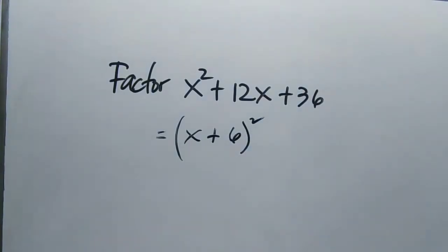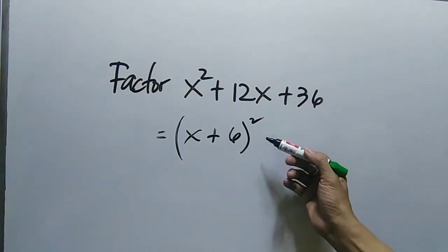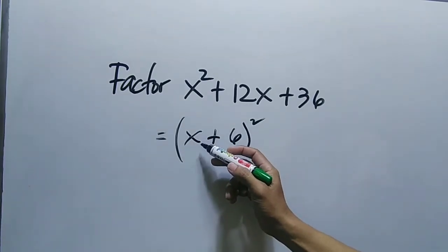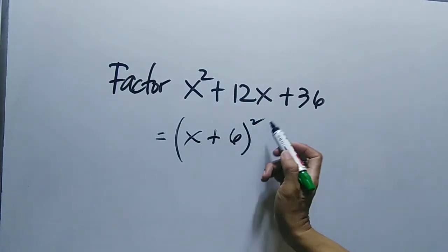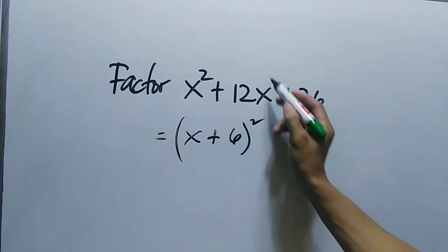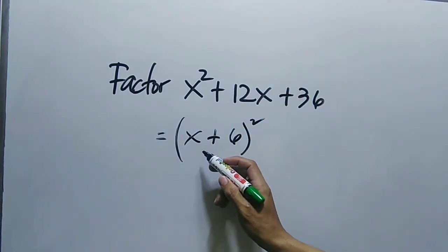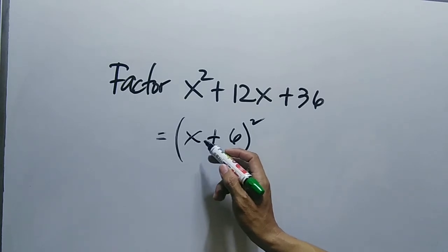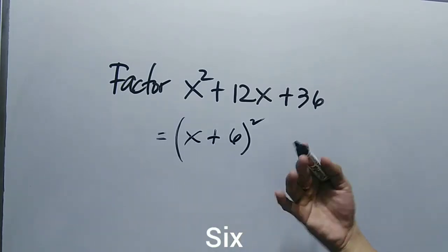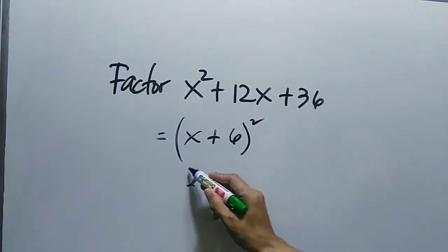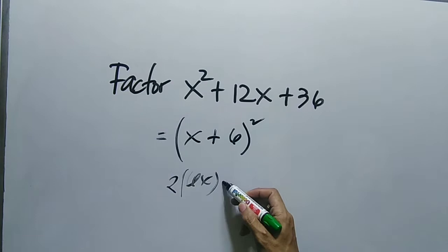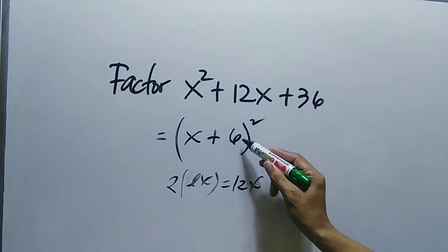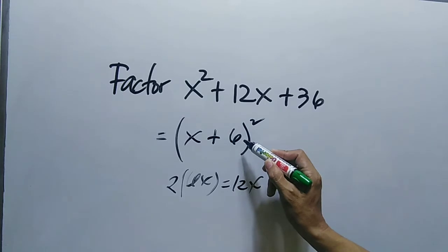Squaring a binomial generates a perfect square trinomial. If we square the first term x, the result is x squared. For the middle term 12x — this is twice the product of the first and second term. The product of x and 6 is 6x, and twice that is 12x. For the last term, 6 squared is 36.